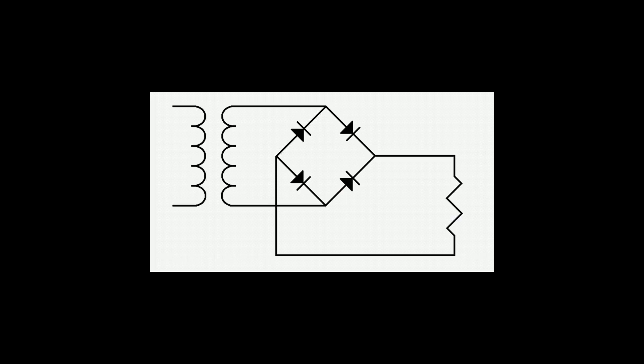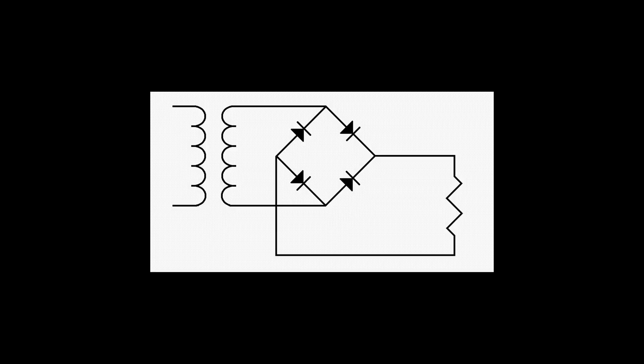You may see a full wave bridge rectifier drawn differently. I prefer the diamond on point style shown here. The resistor to the right represents the circuit load, which is whatever the power supply is supplying power to.